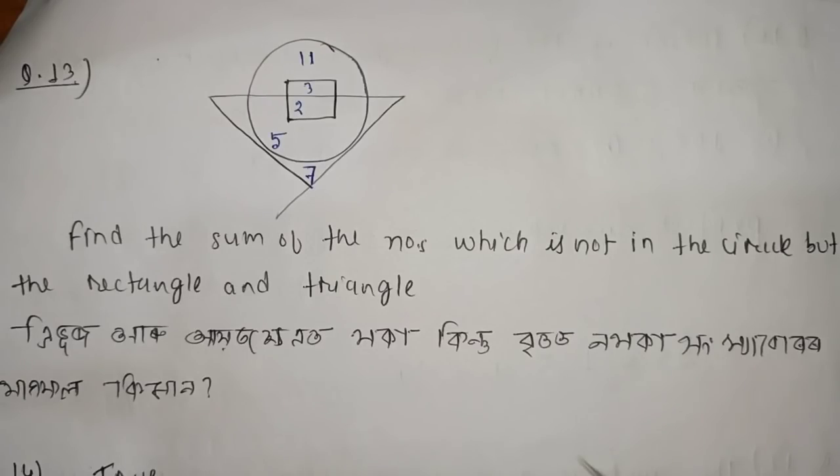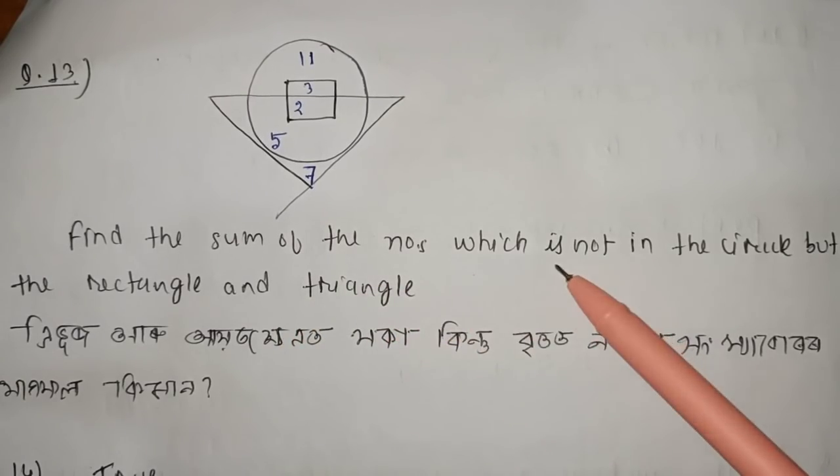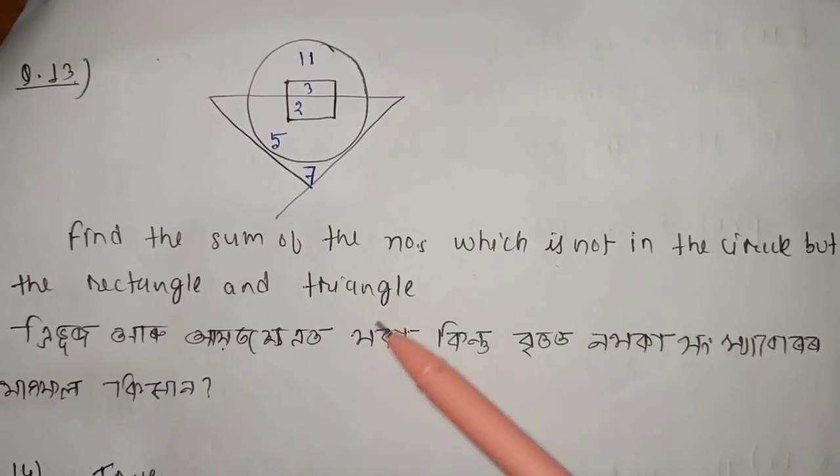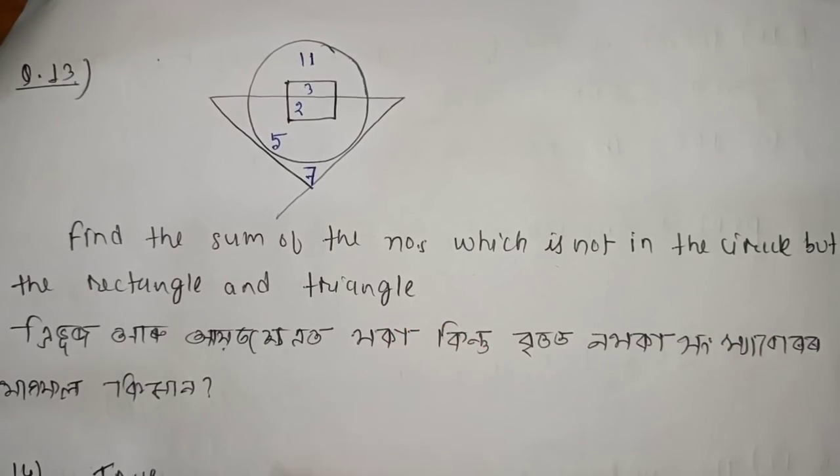The next question: find the sum of numbers which are not in the circle but are in both the rectangle and triangle.